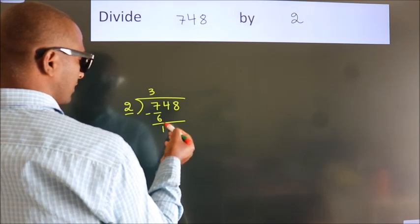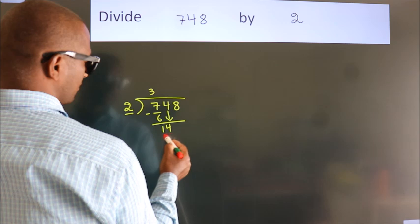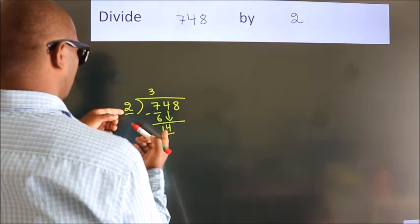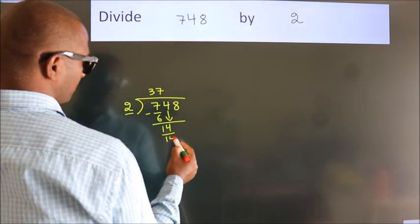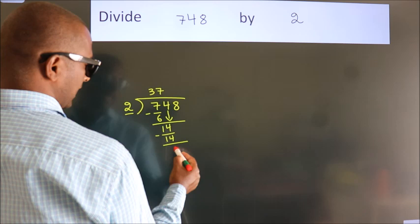After this, bring down the beside number. So 4 down, so 14. When do we get 14? In 2 table, 2 times 7 is 14. Now we subtract, we get 0.